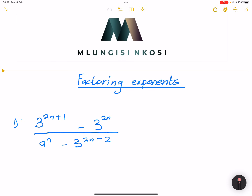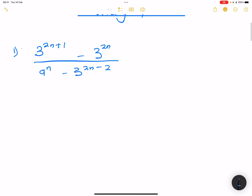We've already looked at multiplication and division, and we know how to deal with exponents. But what happens when there is a plus or minus sign, or there are different terms? Now we're going to start looking at factorising exponents.